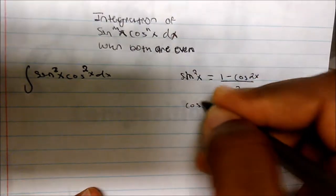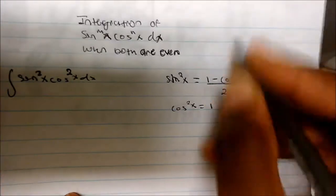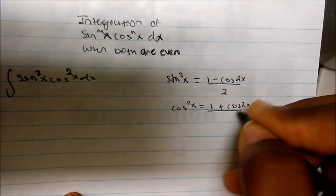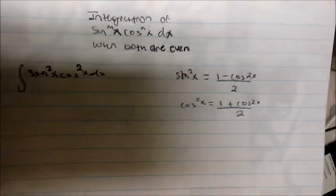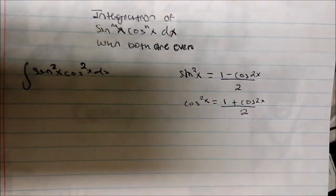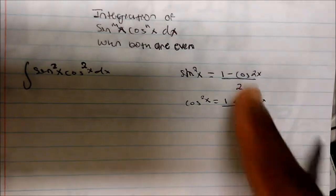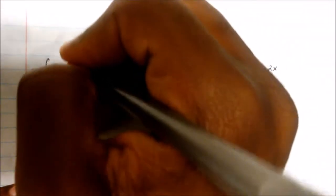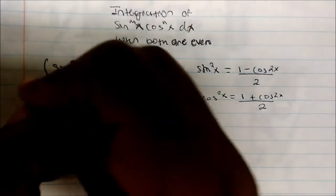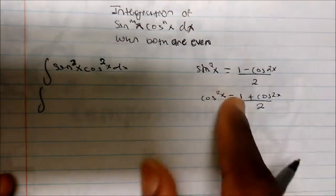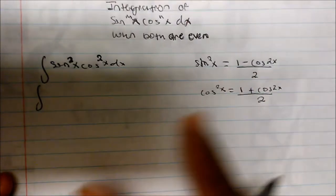And we know cosine squared of x is (1 plus cosine of 2x) divided by 2. We need to remember these because they are going to be very important anytime we see even powers. So if I'm looking at this integral, I can replace these two with these identities.